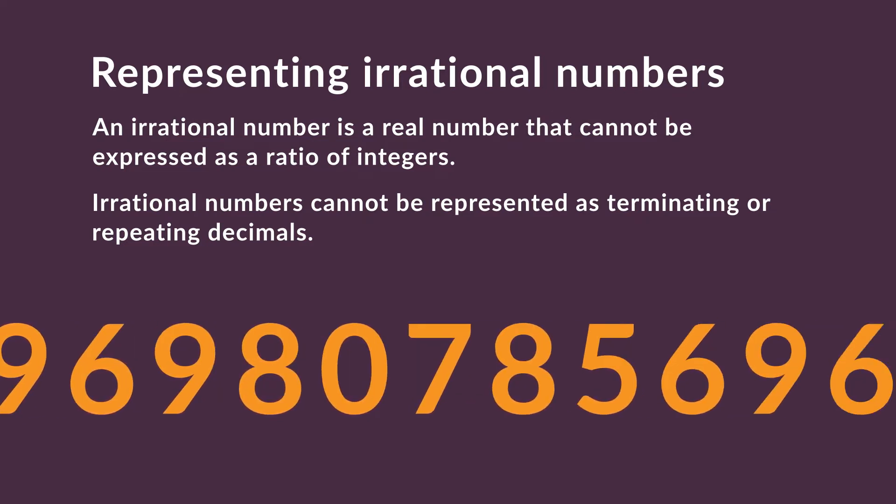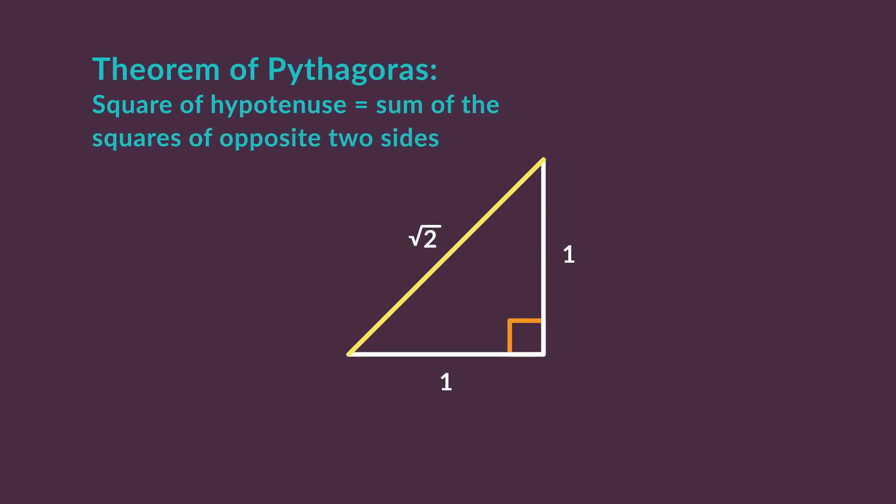However, we can show irrational numbers on diagrams or on the number line. If we draw an isosceles right-angled triangle with two sides equal to one unit, the length of the hypotenuse will be equal to the square root of 2, according to the theorem of Pythagoras.